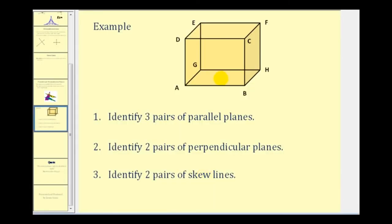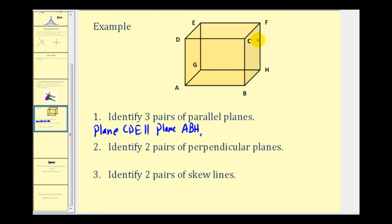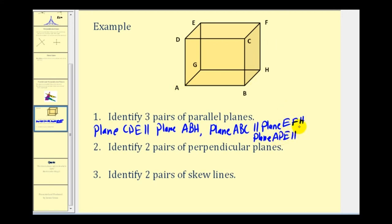Let's look at an example to review the main topics. Number one: using this figure, identify three pairs of parallel planes. The top and bottom planes of this box are parallel — for the top plane we use plane CDE, which is parallel to the bottom plane ABH. The front and back of the box are also parallel, so plane ABC is parallel to plane EFH. And for the left and right sides, plane ADE is parallel to plane BCF.